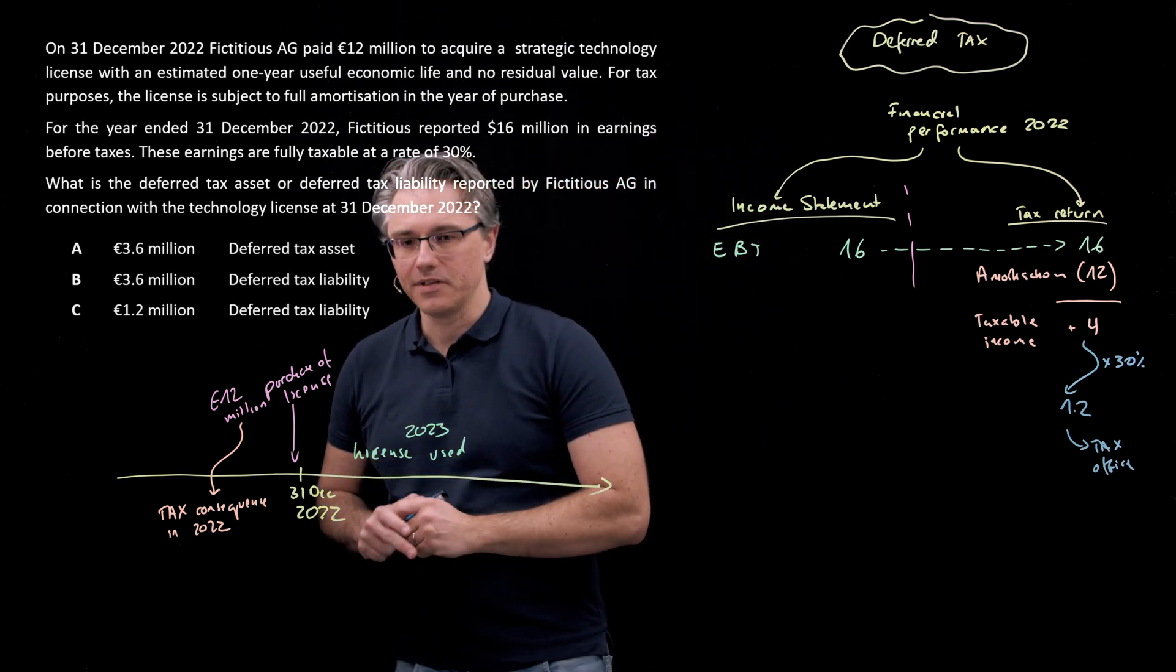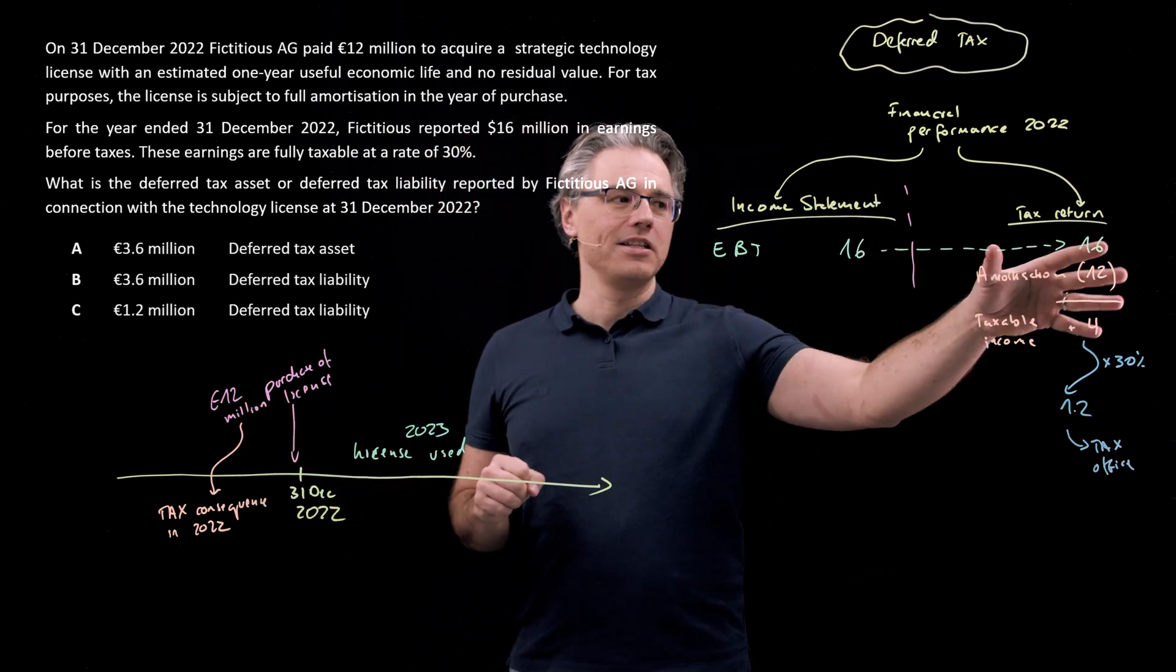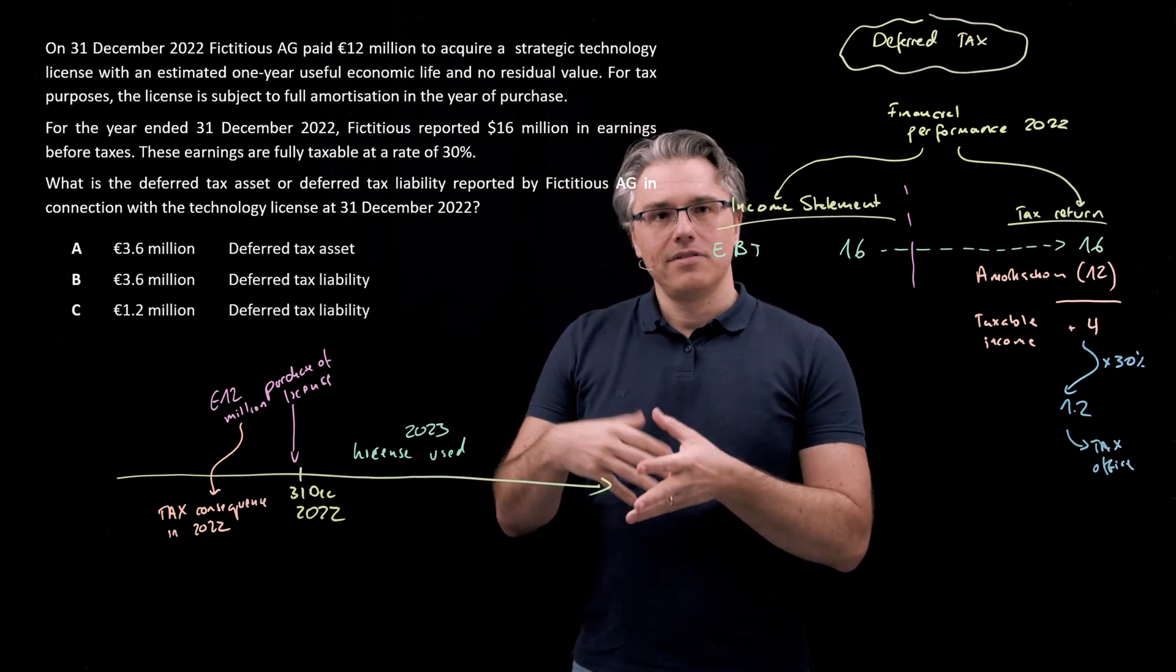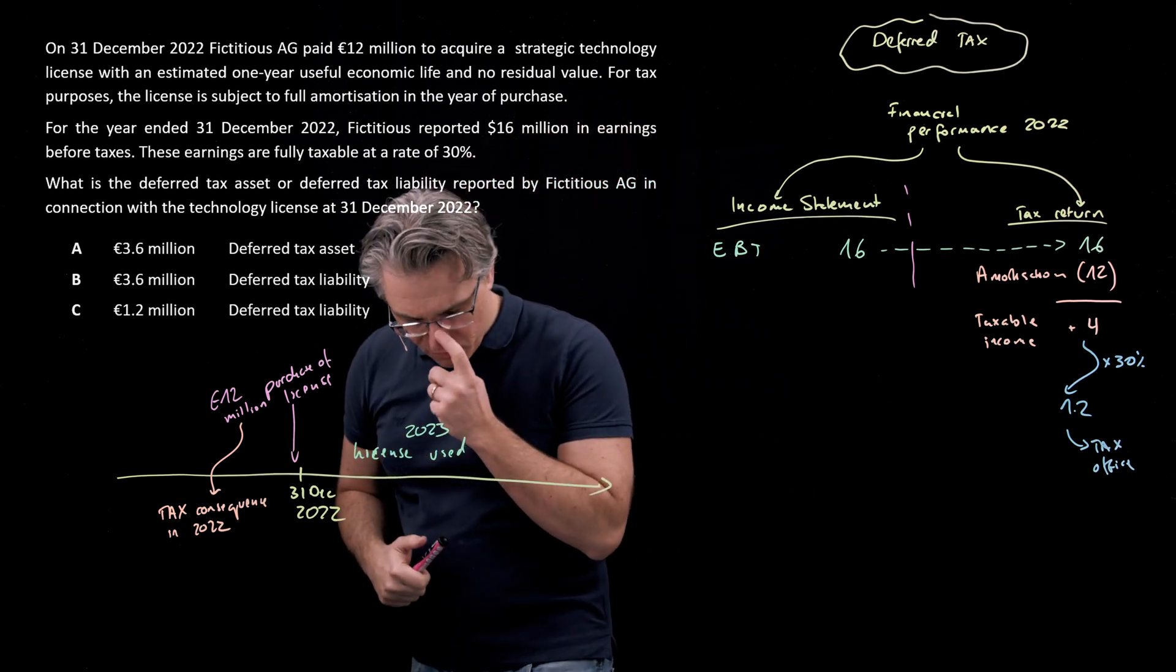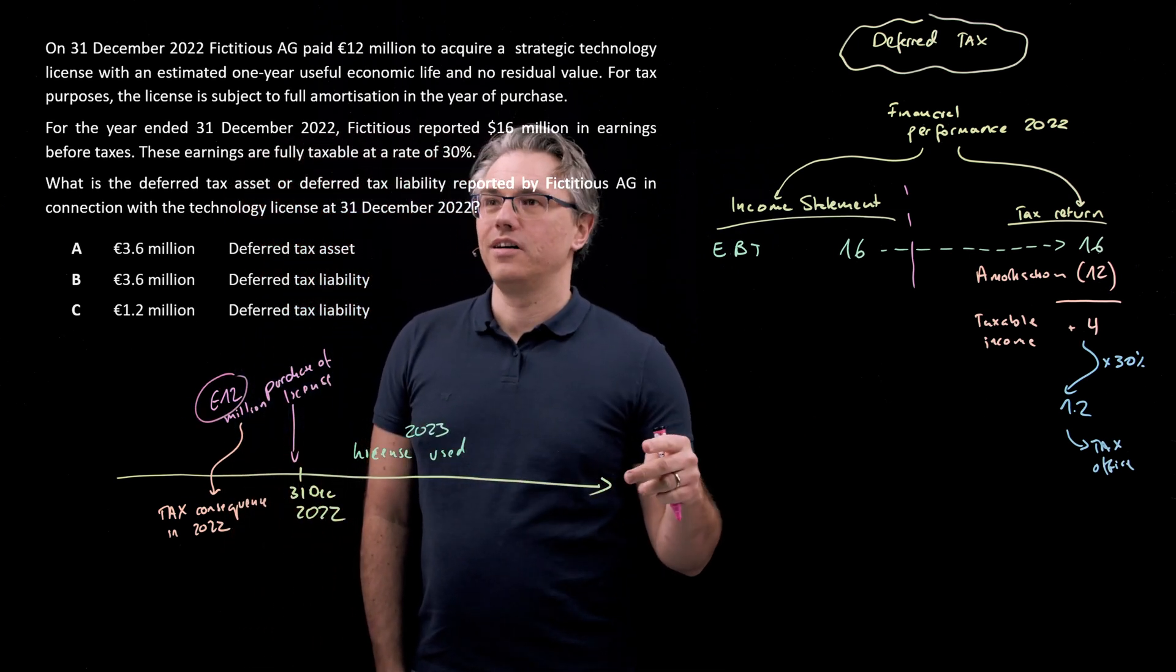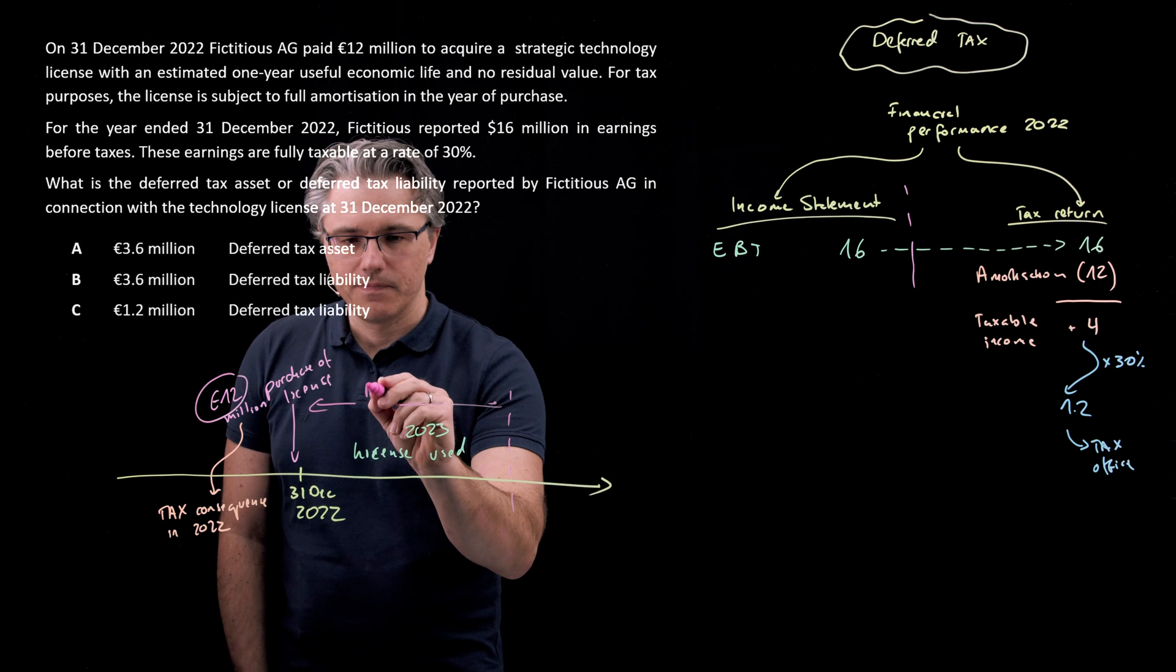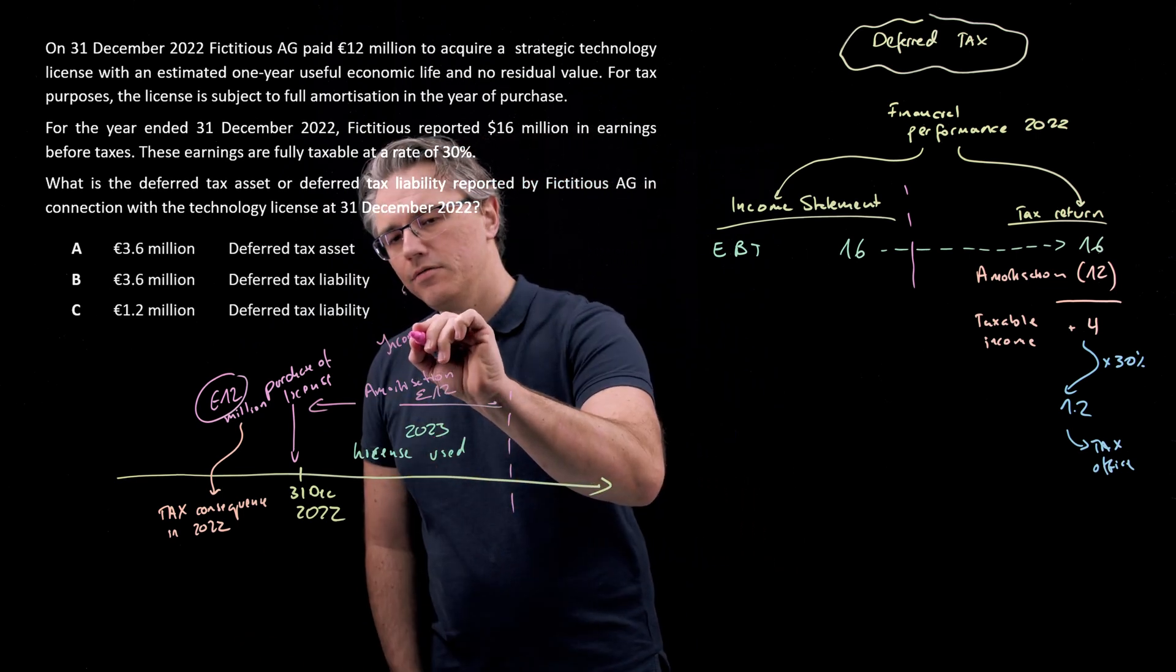As you very well know, this will become a component of our tax expense in the income statement. However, before I do that, let me just make the difference between the treatment of this amortization for tax purposes and its treatment for financial reporting purposes. Amortization or depreciation is an expense which is spread over time over the useful life of the asset. From a financial reporting perspective, we will take the 12 million and spread it out over the entire useful life of the asset, which is the year 2023. So the amortization of the asset will enter our income statement in the year 2023.